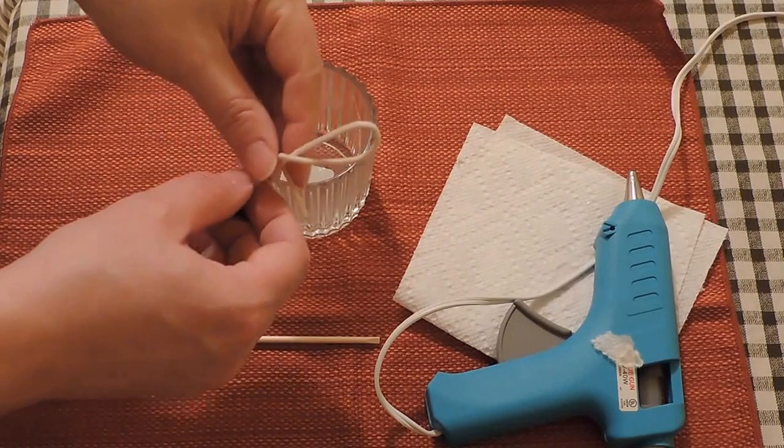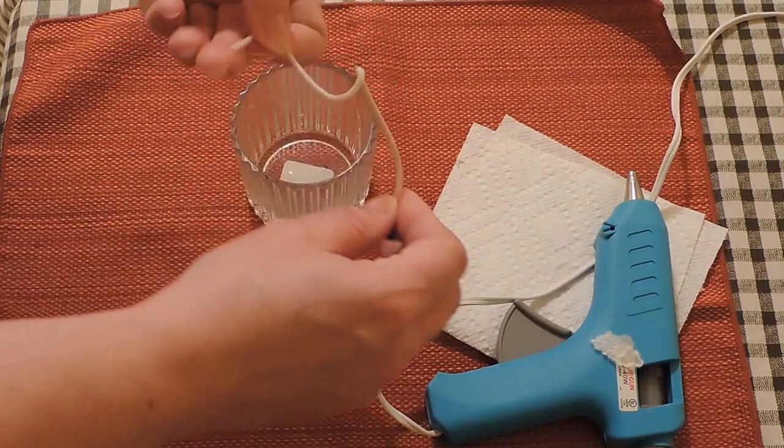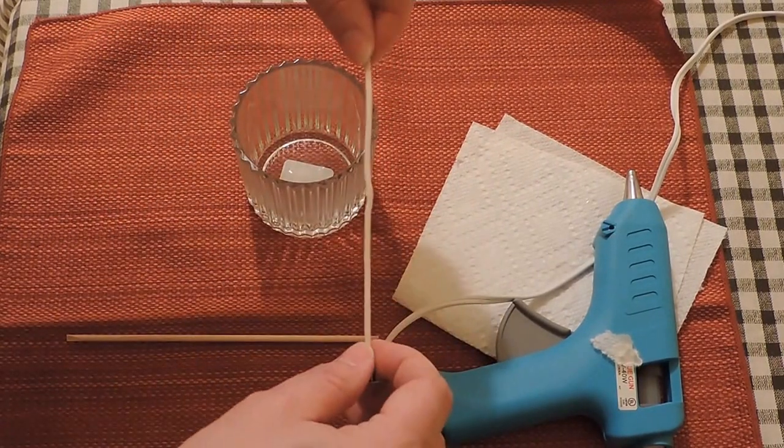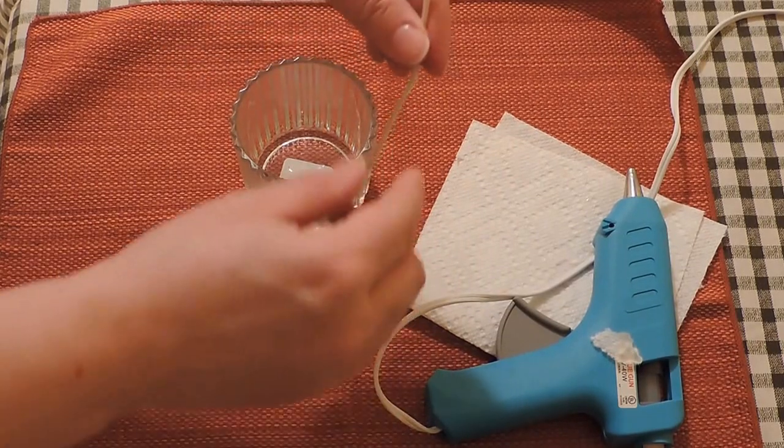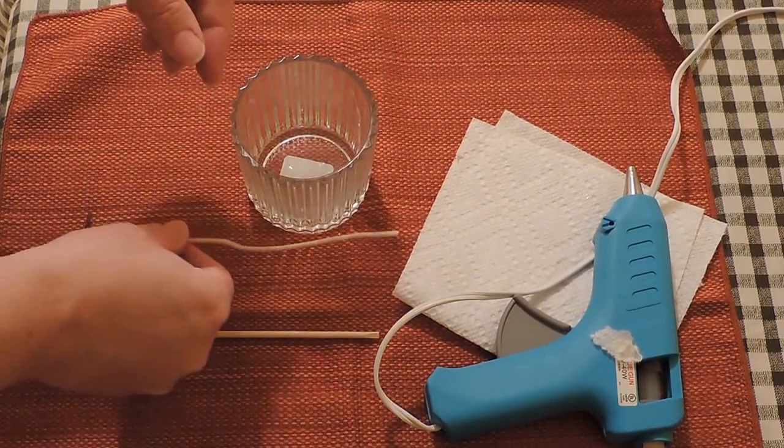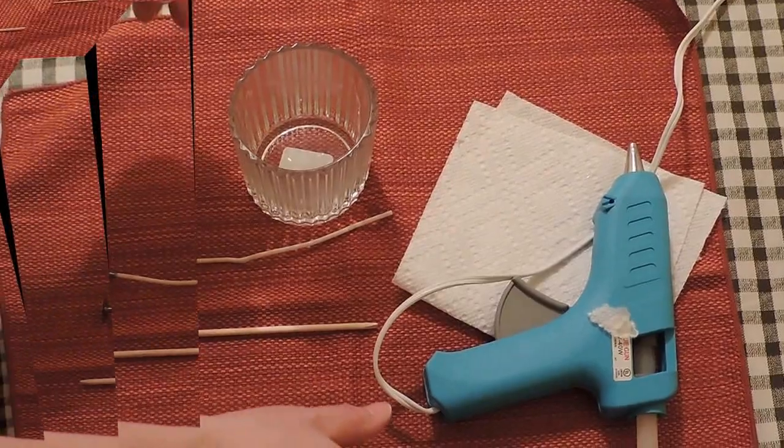While waiting for your glue gun to heat up, which will take about 10 minutes, make sure your container is clean and dry and your wick is stretched as straight as possible. But don't pull too hard on button set wicks or you can separate the wick from the button bottom.